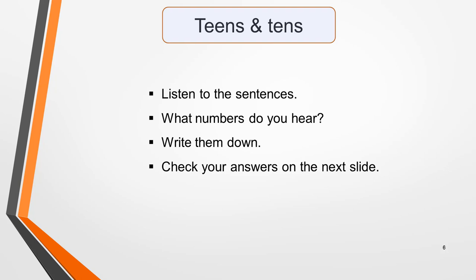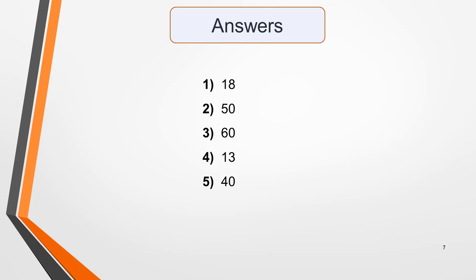1. She's going to be 18 next birthday. 2. My best friend lives just down the road at number 50. 3. He ran his first marathon at 60 years old. 4. My niece cycles to work every day even though it's over 13 miles each way. 5. The traffic was so bad it took me 40 minutes to get home from work yesterday. Here are the answers: 18, 50, 60, 13 and 40.